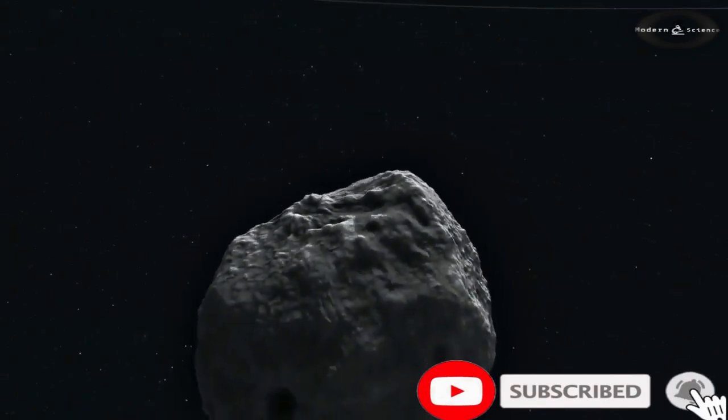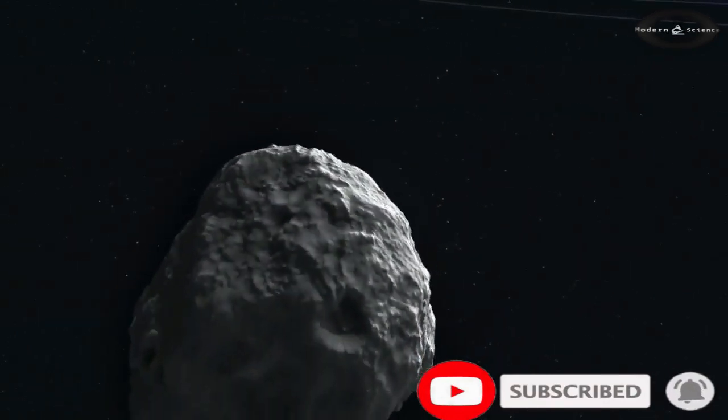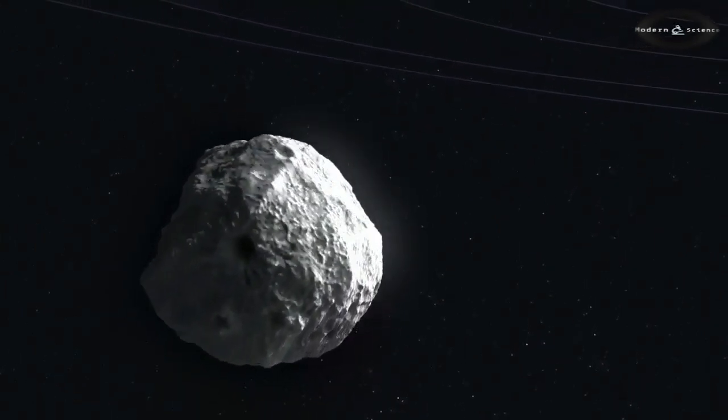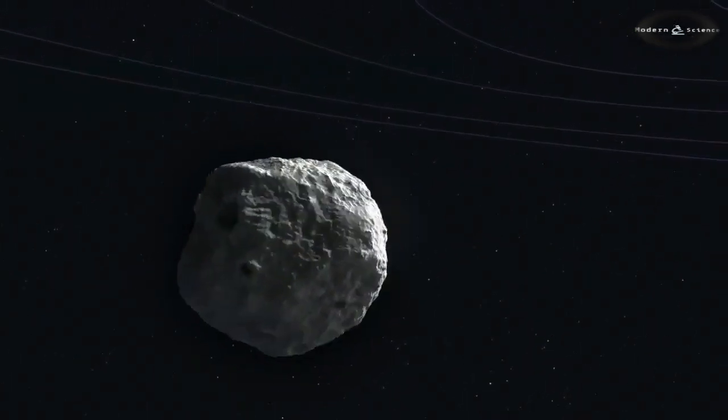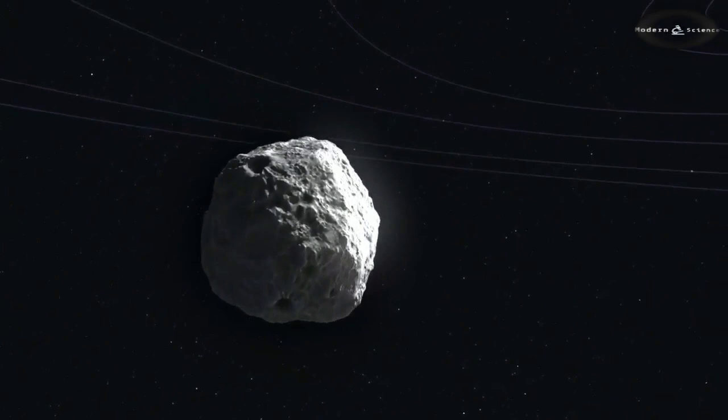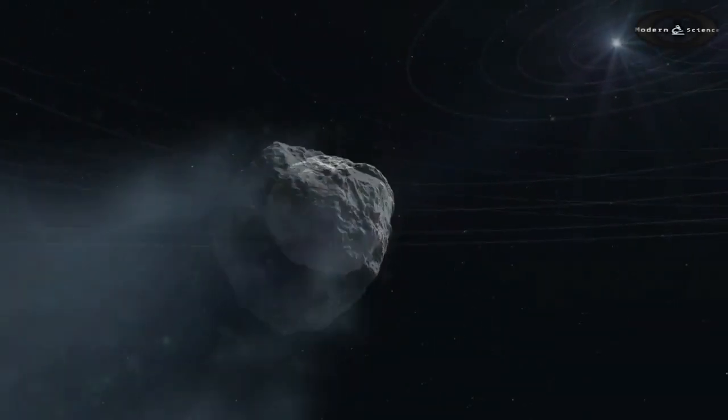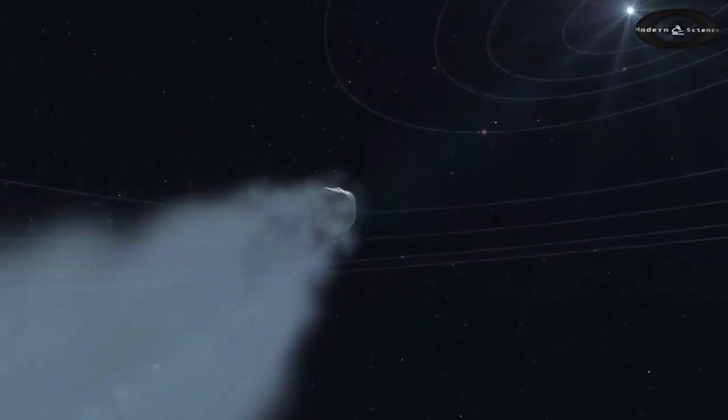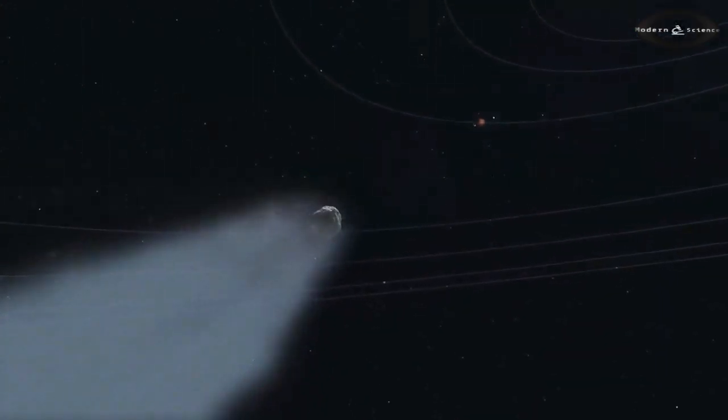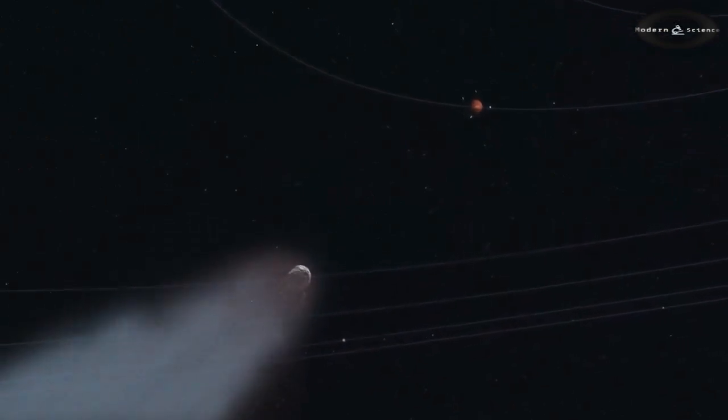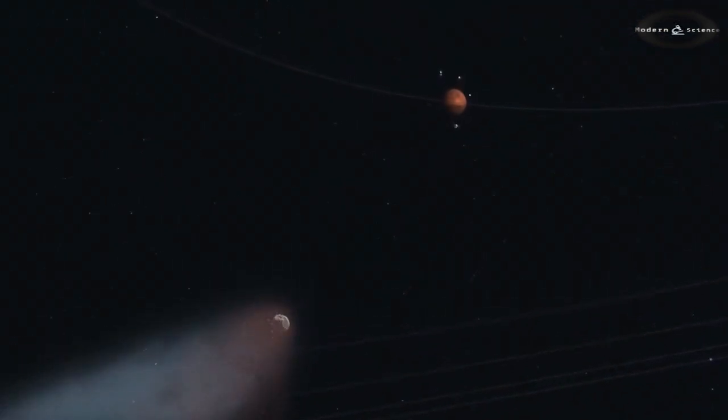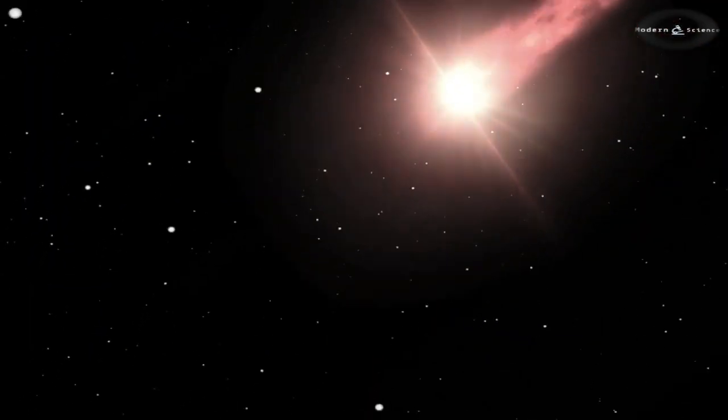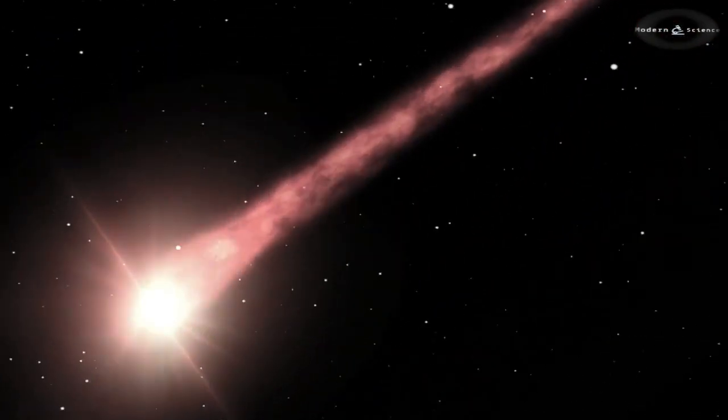Scientists found that comets contain complex organic compound molecules that are rich in carbon, hydrogen, oxygen, and nitrogen. The interesting thing is these are the elements which make up nucleic acids and amino acids, which are the essential ingredients for life as we know it.